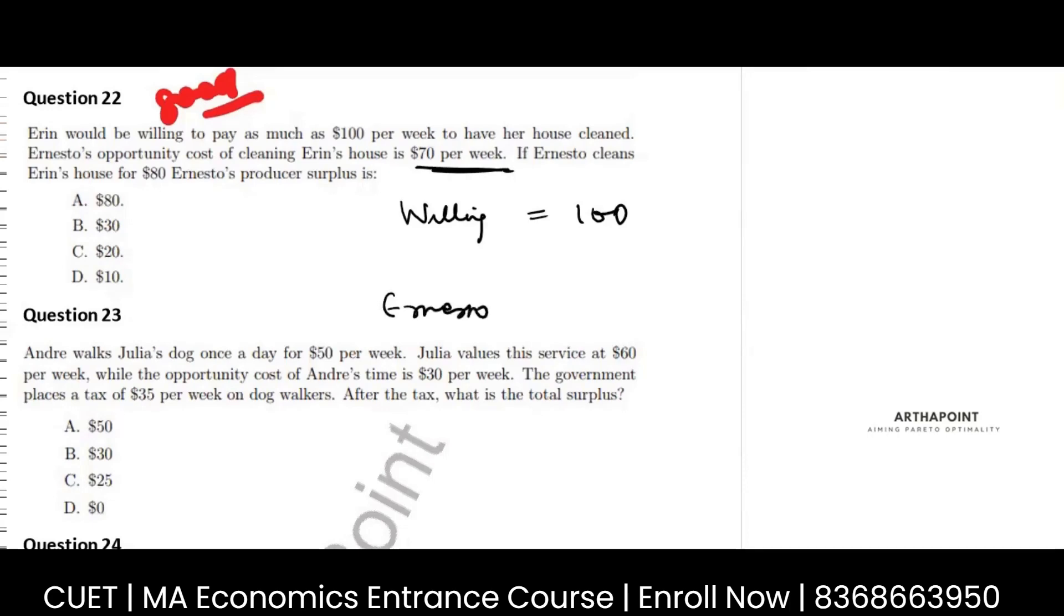This is given as another person, Ernesto. This is Erin. And Ernesto, his cost of cleaning is 70. If Ernesto cleans for 80,